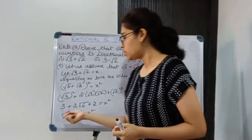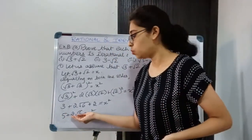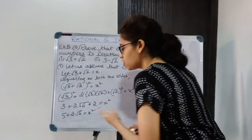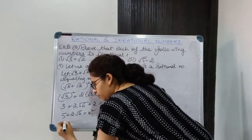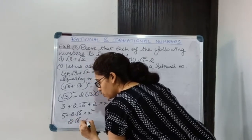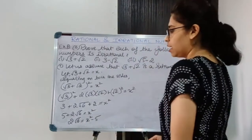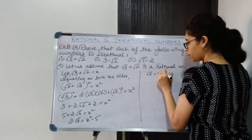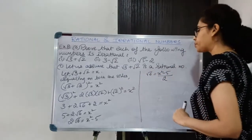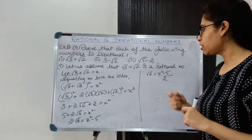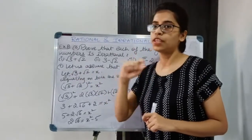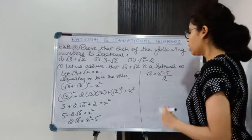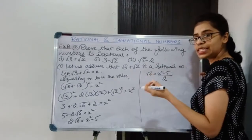Now what we will do is shift all the numbers to the right except the root, leaving the root on one side. Shifting 5 first: 2√6 = x² − 5. Now shifting 2 to the other side: √6 = (x² − 5)/2. Now x is a rational number because we assumed √3 + √2 is rational. 5 is rational, 2 is rational. So (x² − 5)/2 is rational, but √6 is irrational.